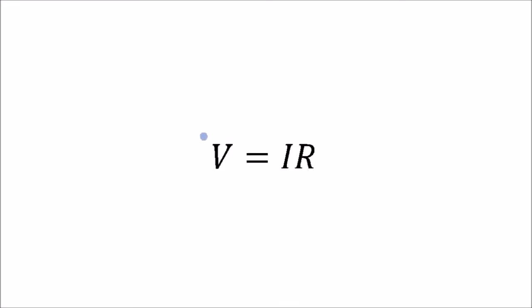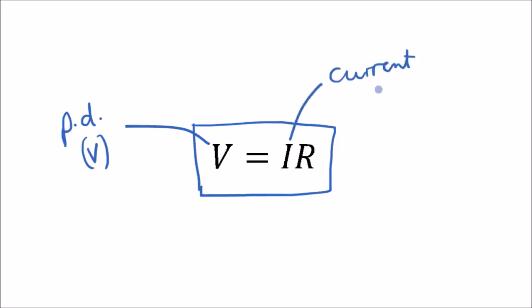Ohm's law can be written as an equation: V equals IR. V is the potential difference, measured in volts. I is the current, measured in amps. And R is the resistance.